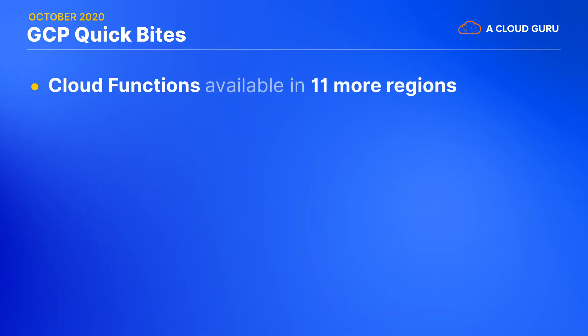We'll start our quick bites off with some updates. Cloud Functions are now available in 11 more regions across North and South America, Europe, the Middle East, Asia, and Oceania. This brings the total number of available regions to 19. With the first regions to host Cloud Functions in South America and Australia, this opens the gates to new customers in locations previously unavailable.